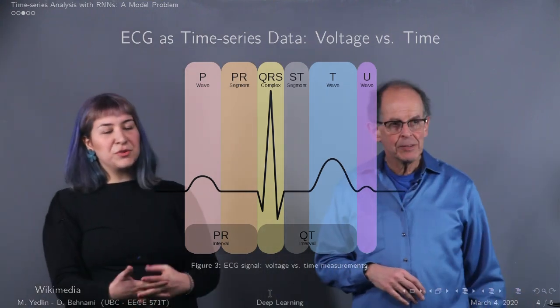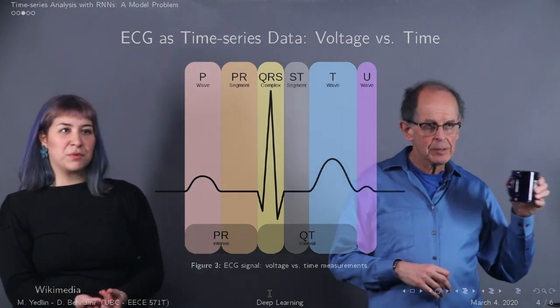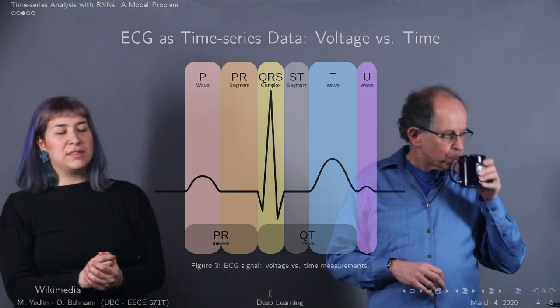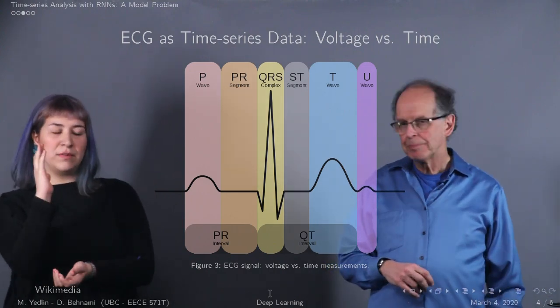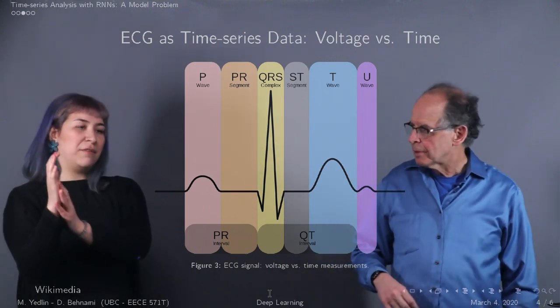So the electrocardiogram, which is what you get done if you suspected arrhythmia and went to the ER, is essentially a signal, a 1D signal which measures the voltage across certain nodes on the heart as a function of time.